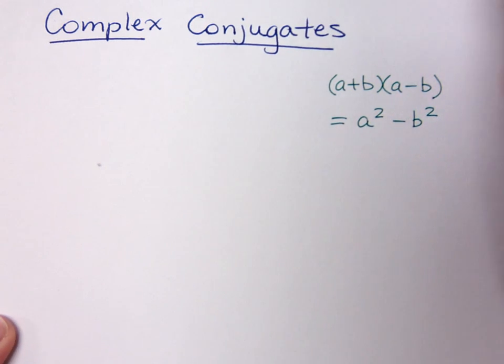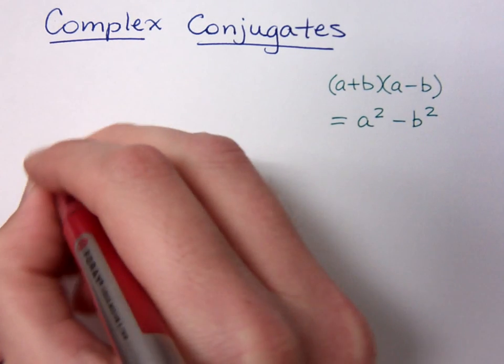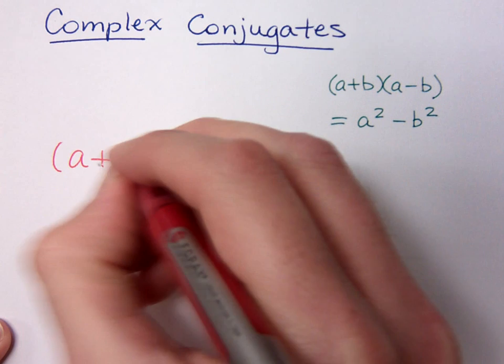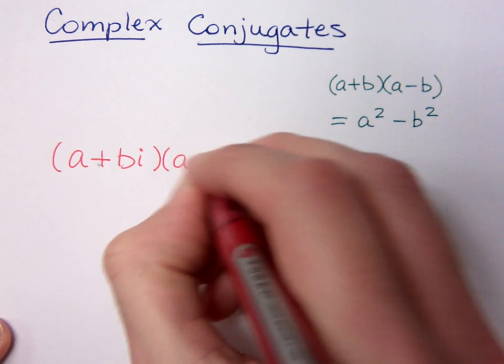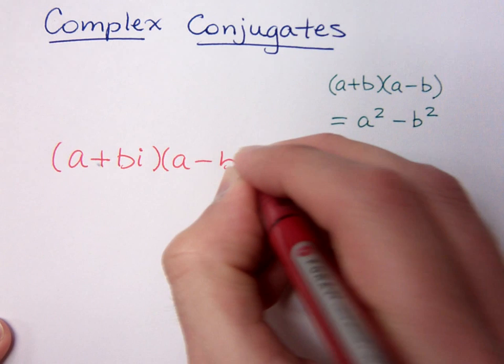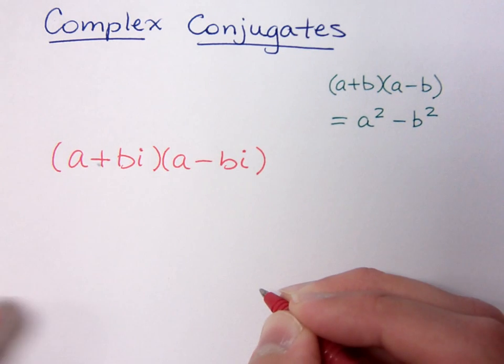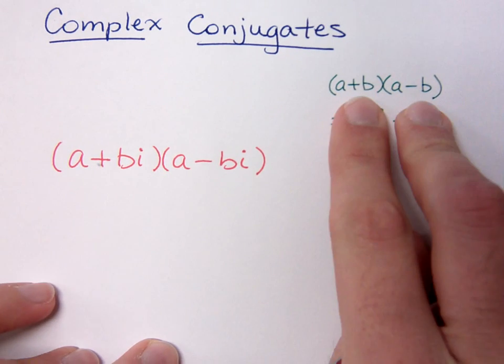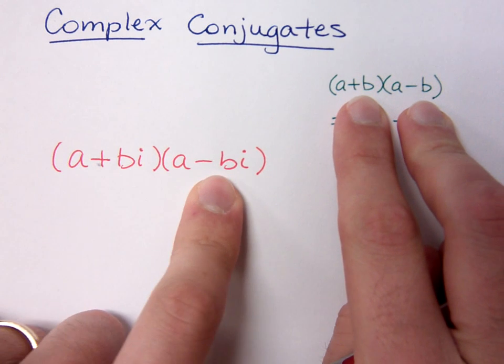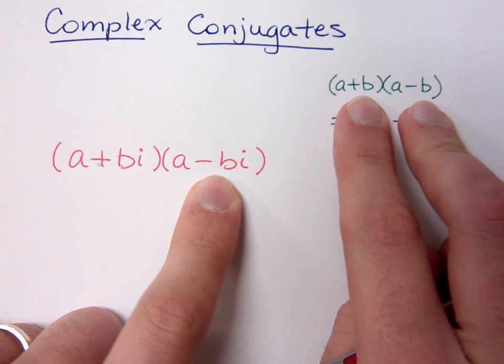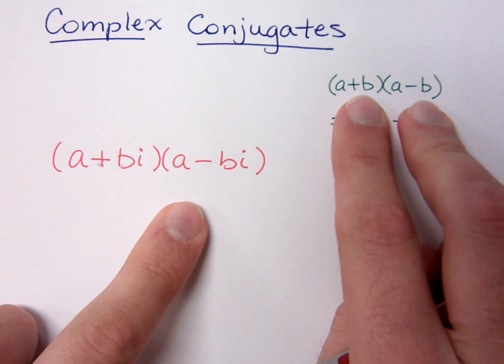Well, complex conjugates look like this: a plus bi times a minus bi. They're a lot like this guy, except we're working with complex numbers. So a plus bi and a minus bi, these guys are called complex conjugates of each other.